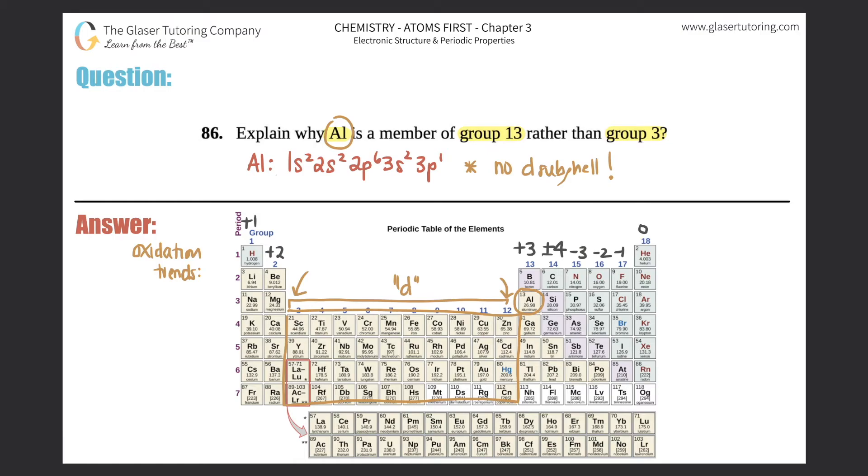The main group elements, which are groups 1, 2, and 13 through 18, have to be split because of the transition metals, which are the d block. Transition metals have many different charges.